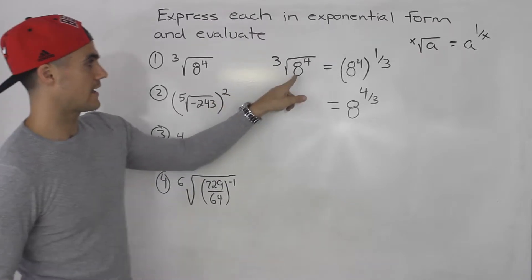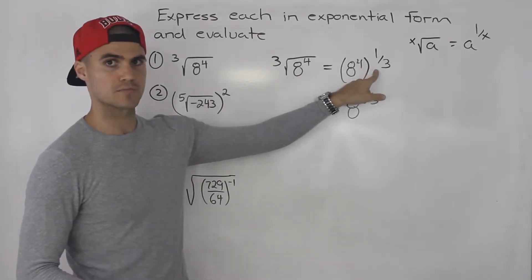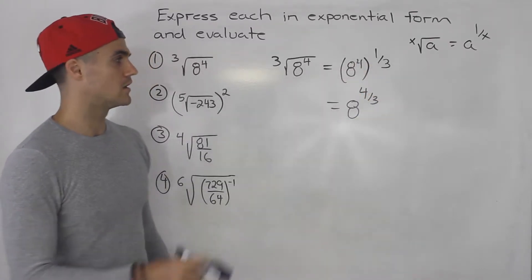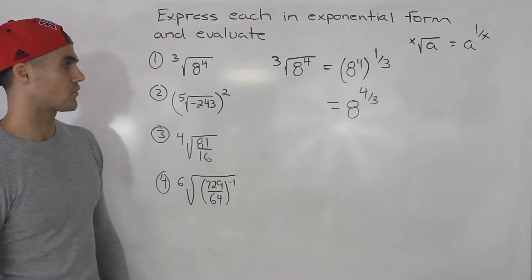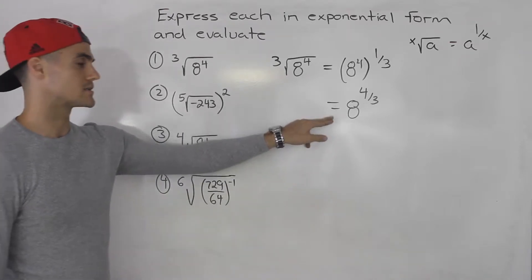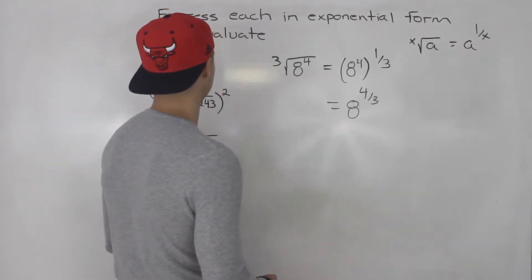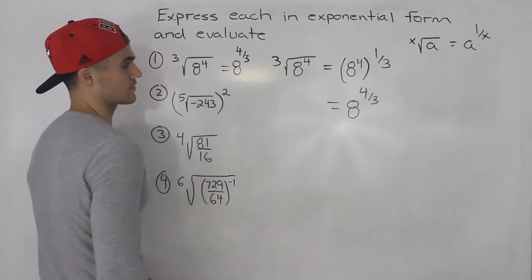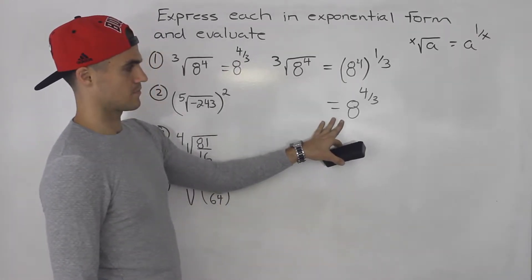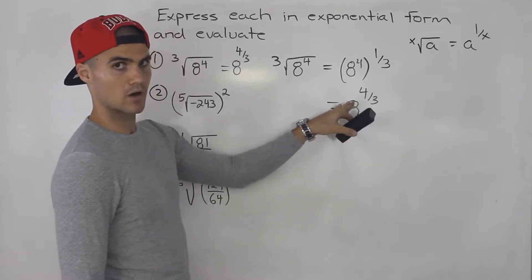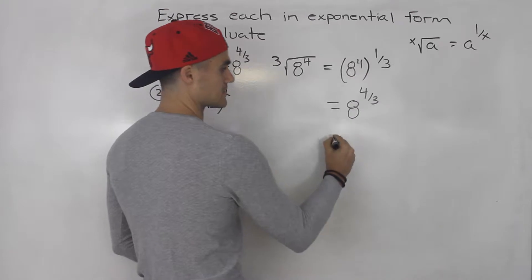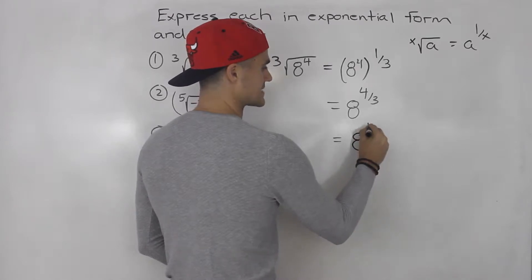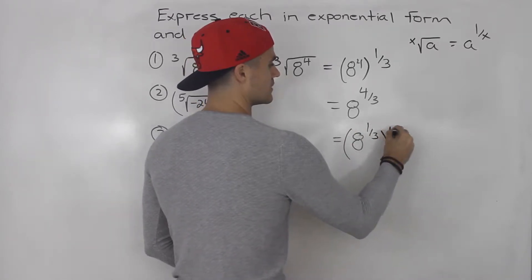This is the simplified exponential form of the radical expression. Now we also have to evaluate it. When I get a number to the power of a fraction, I like to split the fraction up — but I prefer to rewrite 8 to the power of 4 over 3 as 8 to the power of 1 over 3, all raised to the power of 4, putting the denominator inside and the numerator outside.